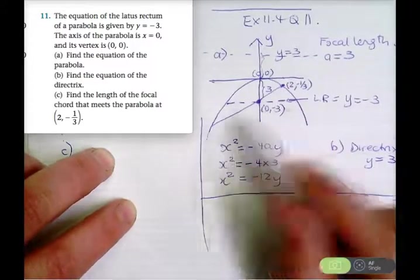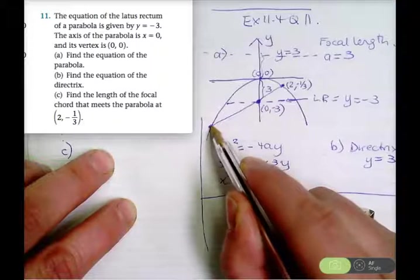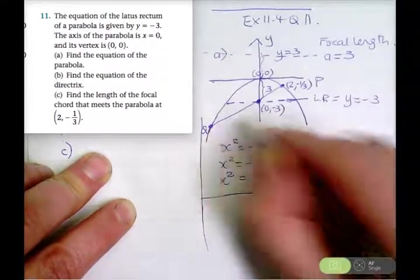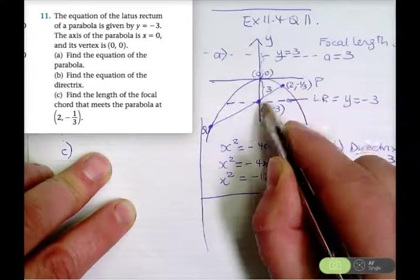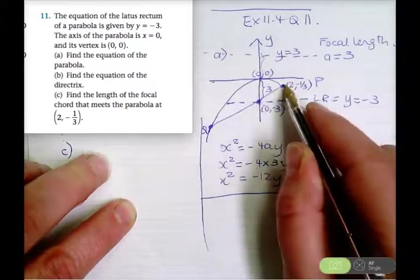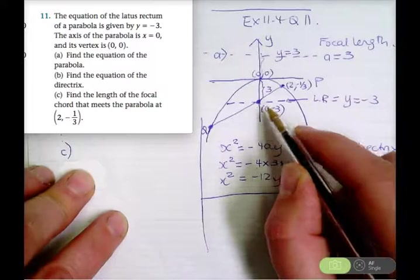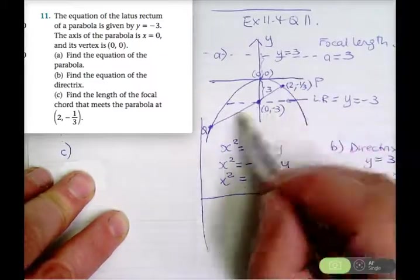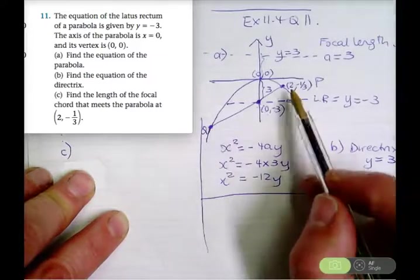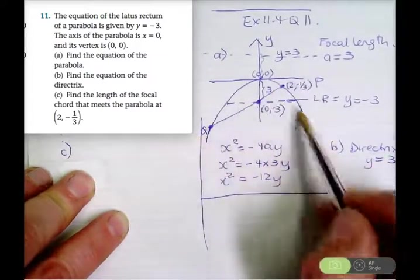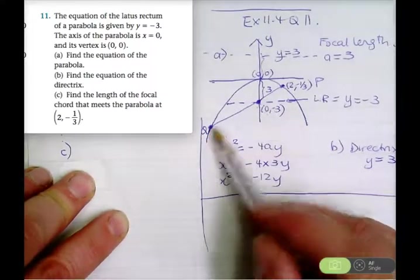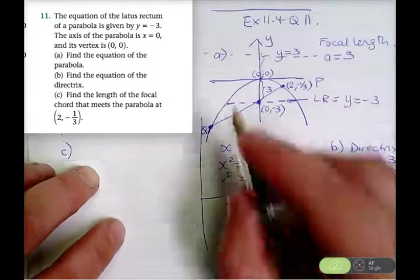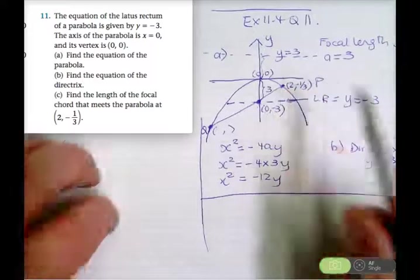I'll call this endpoint P and the other end Q. If I find the equation of the line between P and the focus, then I can solve it simultaneously with the parabola to find the coordinates of Q. Once I have Q's coordinates, I can use the distance formula to find the length PQ. To find the equation of the line I need the gradient, which I can calculate from the two known points.